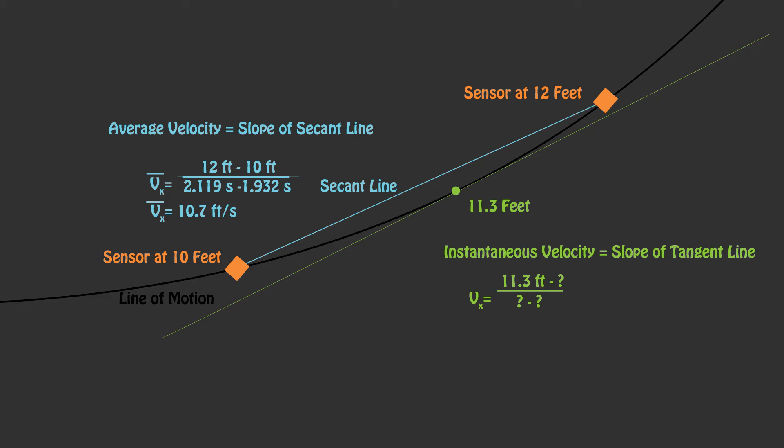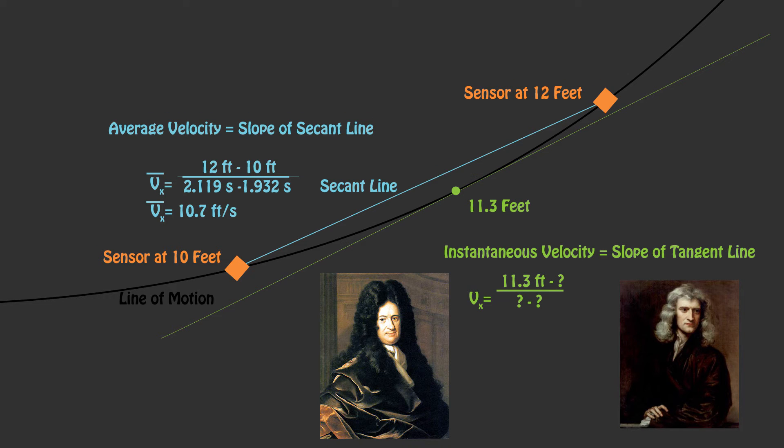Since we need two points to define the slope of a line, we cannot use basic algebra to define the velocity at any point. This is why the issue of finding instantaneous velocity was called the tangent problem. It took Newton and Leibniz discovering calculus to solve it. We're going to discuss this more in our next video when we talk about derivatives and instantaneous velocity.